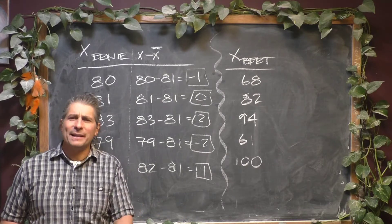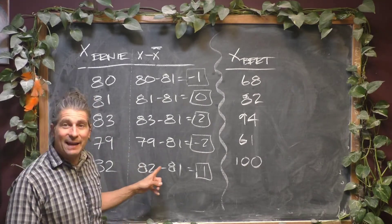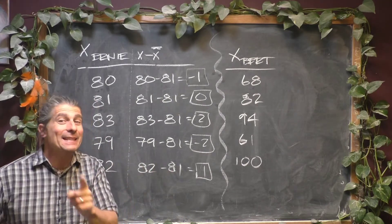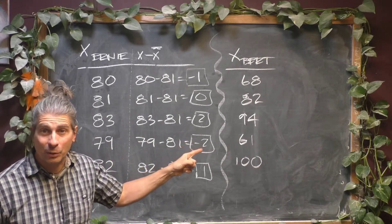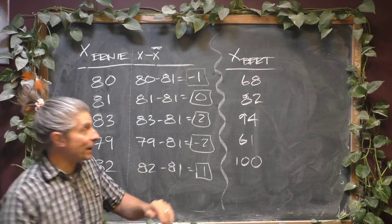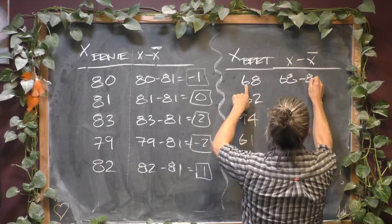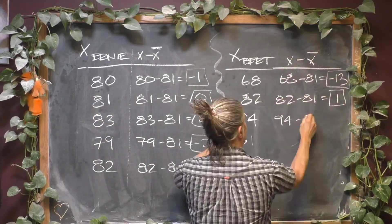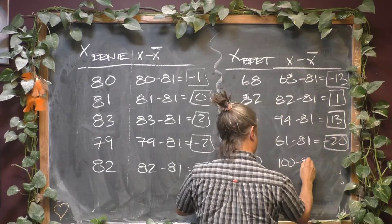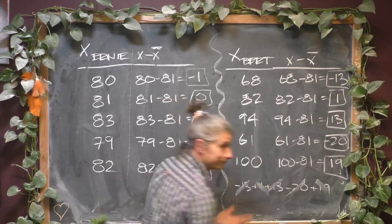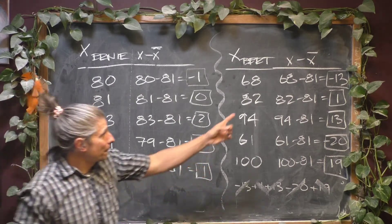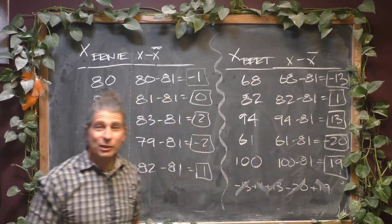And you might say to yourself, well, Sean, that's just because it's this data set. But check this out. It's actually not because it's this data set. Let's look at Bert's too. I'm going to speed this up a little bit to get the process quicker. There's Bert's deviations.